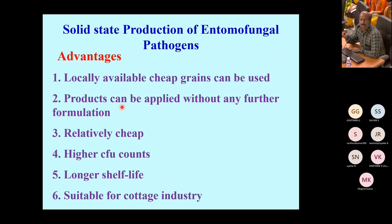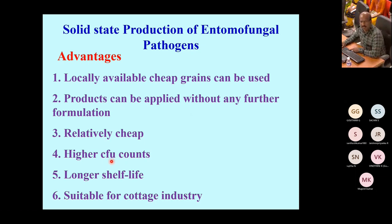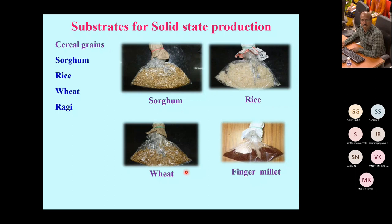Advantages of solid state fermentation include use of locally available and cheap grains. We have tried several substrates — ragi, sorghum, rice, and wheat — and rice was found to be the best for high spore production. This product can be applied without further formulation, is cheap for farmers, has higher CFU, good shelf life, and is suitable for cottage industries.